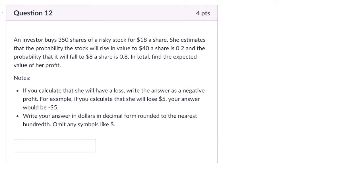Okay, so it says here that an investor buys 350 shares of a risky stock for $18 a share. Okay, that's a lot of shares of that stock. Okay, why are you buying it? Anyway, she estimates that the probability the stock will rise in value to $40 a share is 0.2.